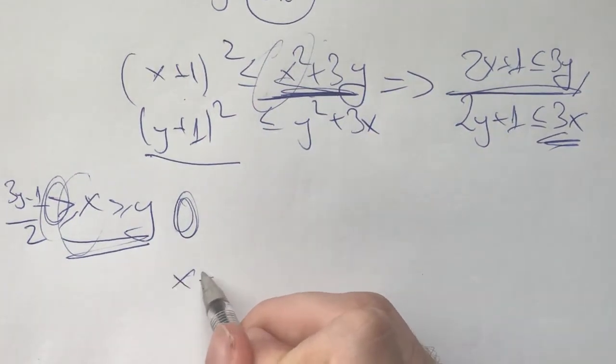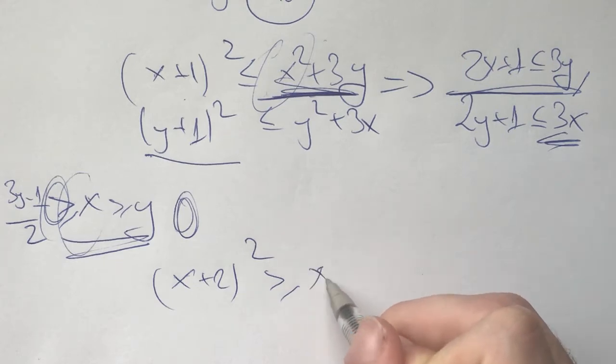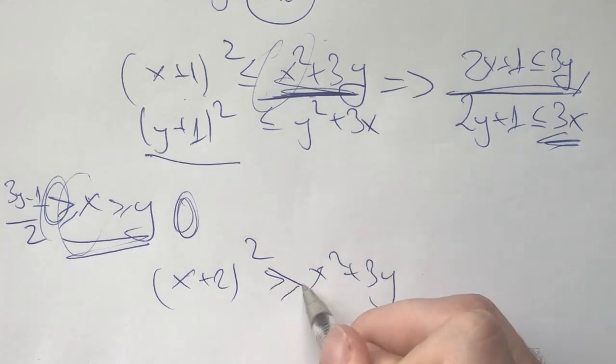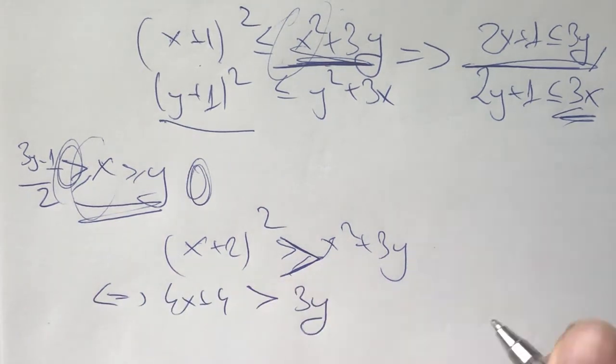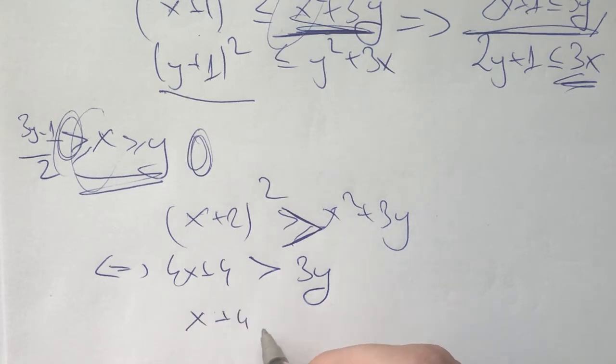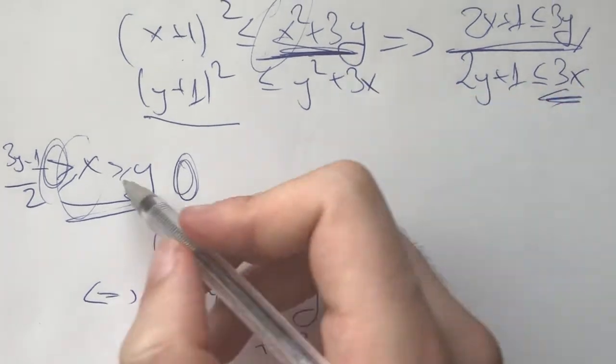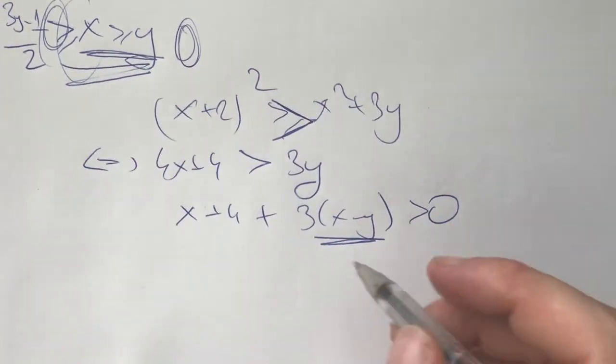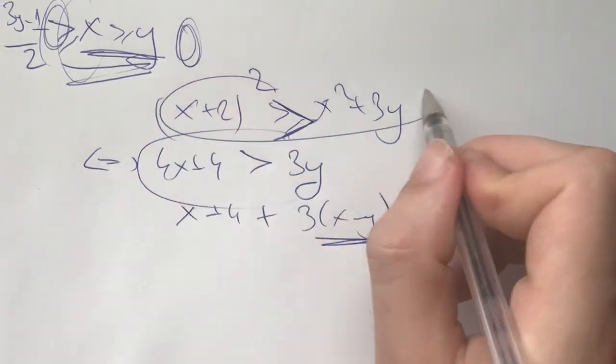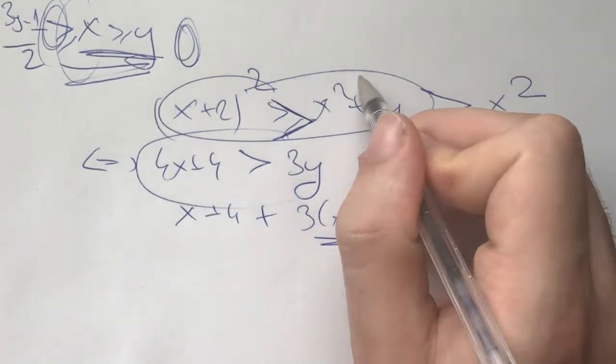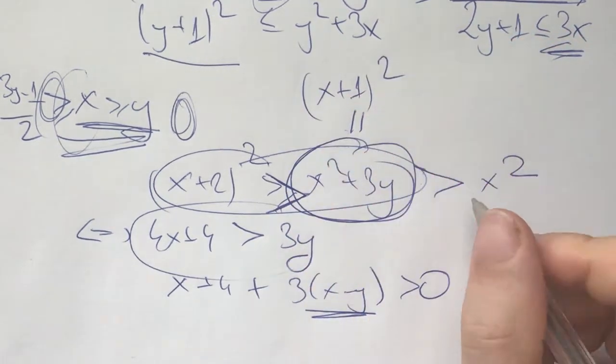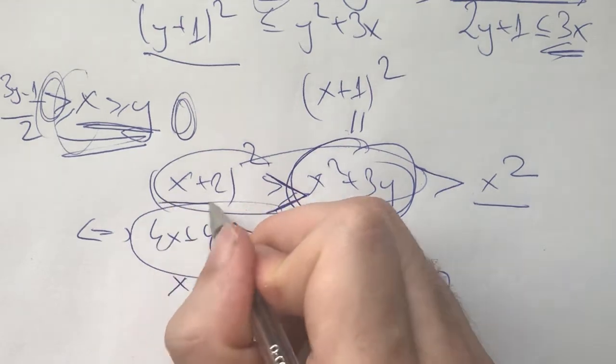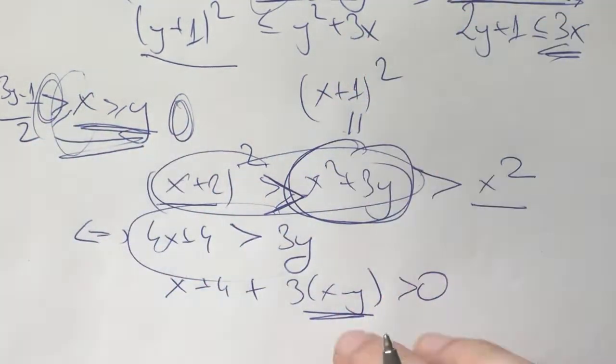For example, we know that (x+2)² is going to be strictly greater than x²+3y. And this is going to be true if and only if 4x+4 > 3y, which is true because this implies that x+4+3(x-y) > 0, which is true because we assumed, without loss of generality, that x ≥ y. So now we know this can't be true. This is greater than x². So this thing right here must be equal to (x+1)², because it's the only square between x² and (x+2)². And this is really the technique that I want to show you.